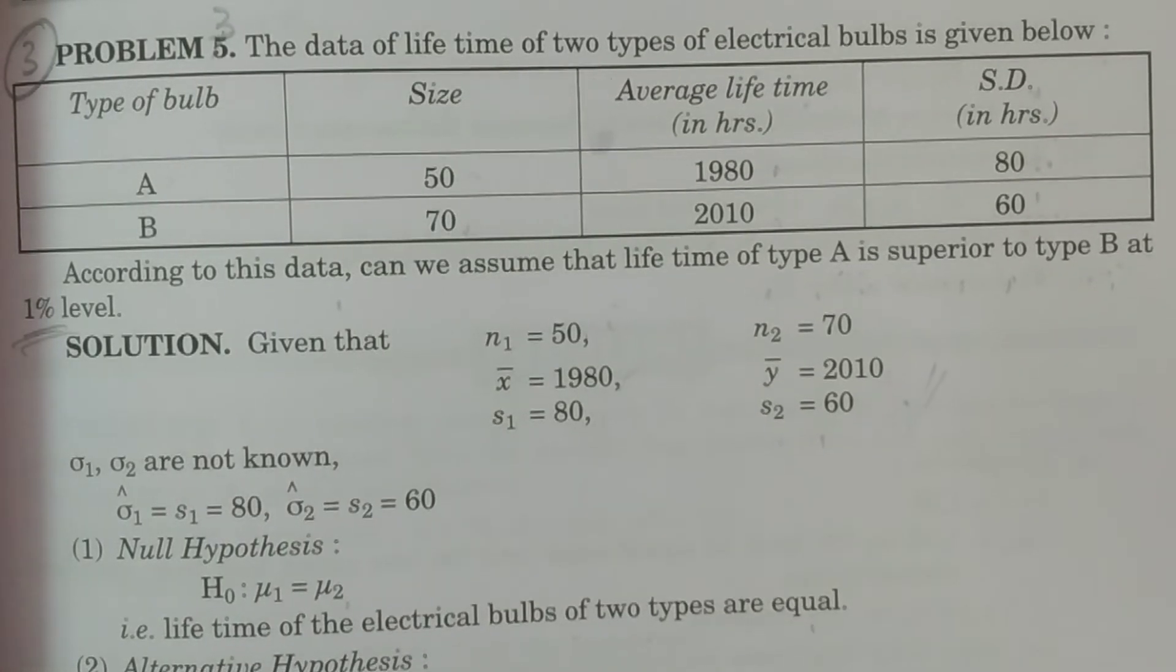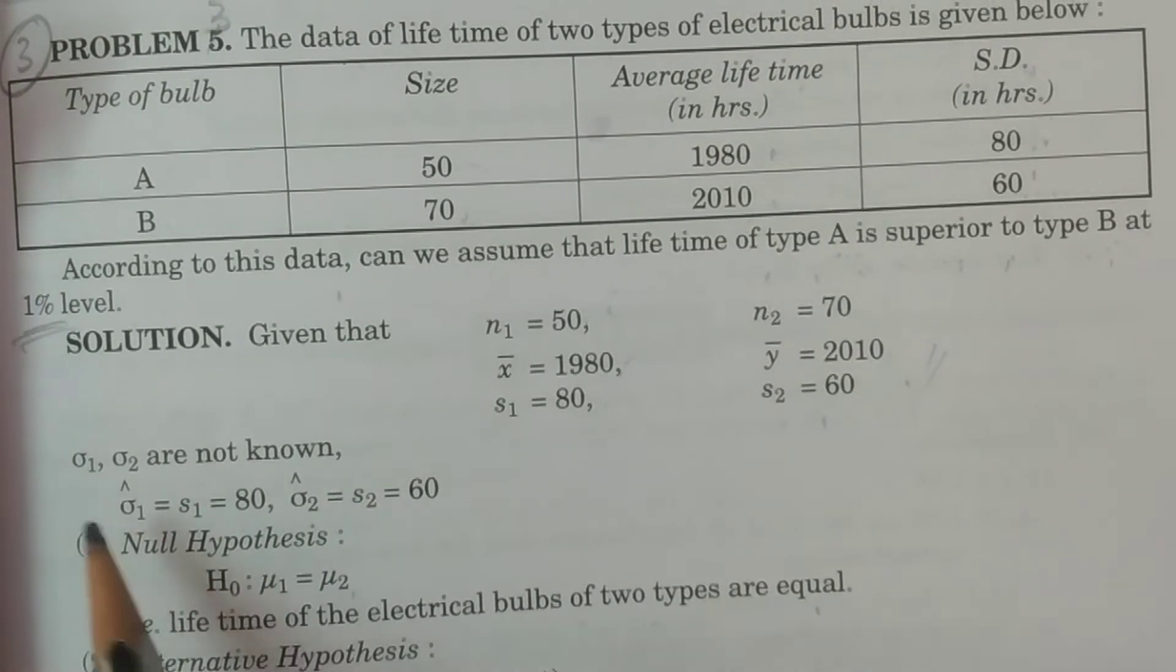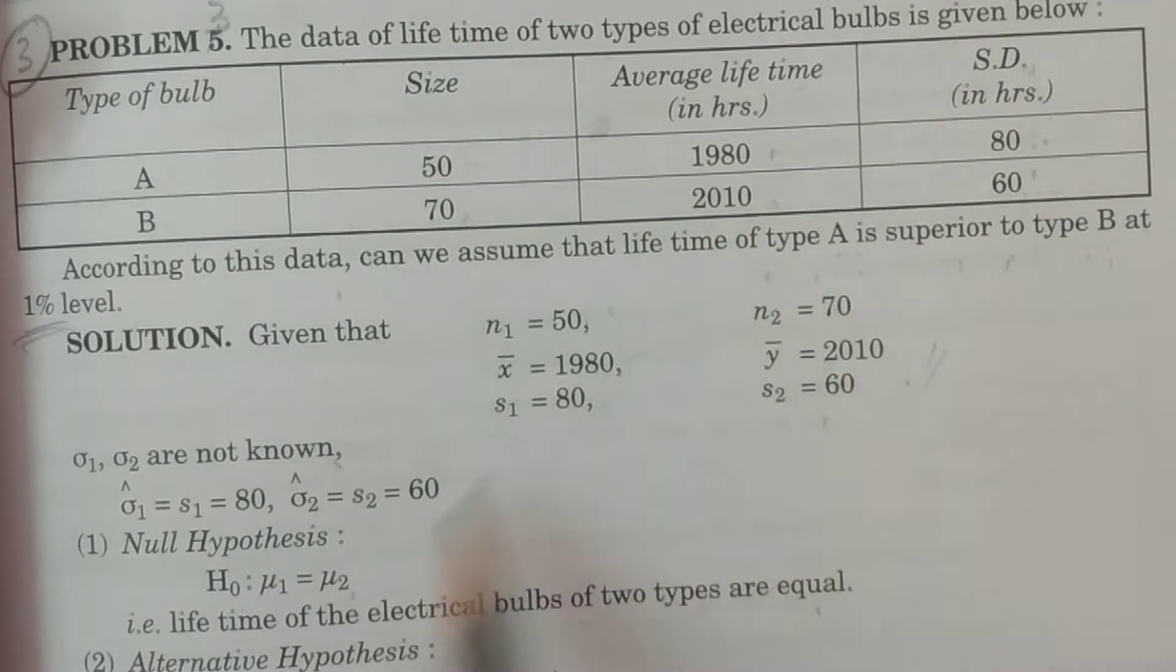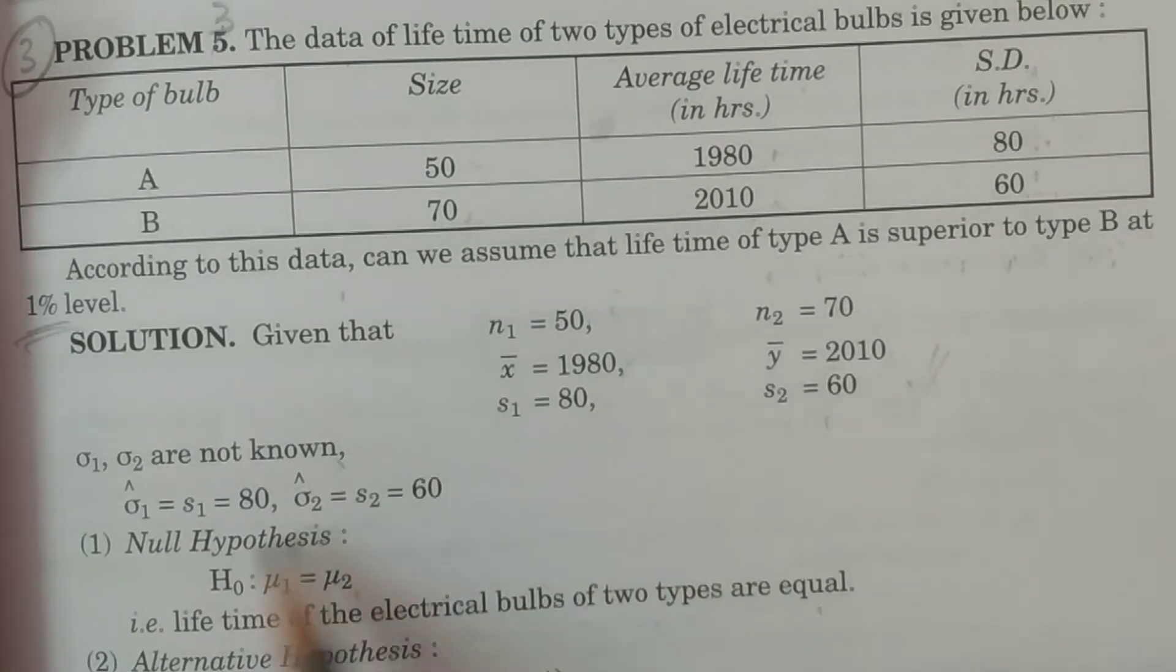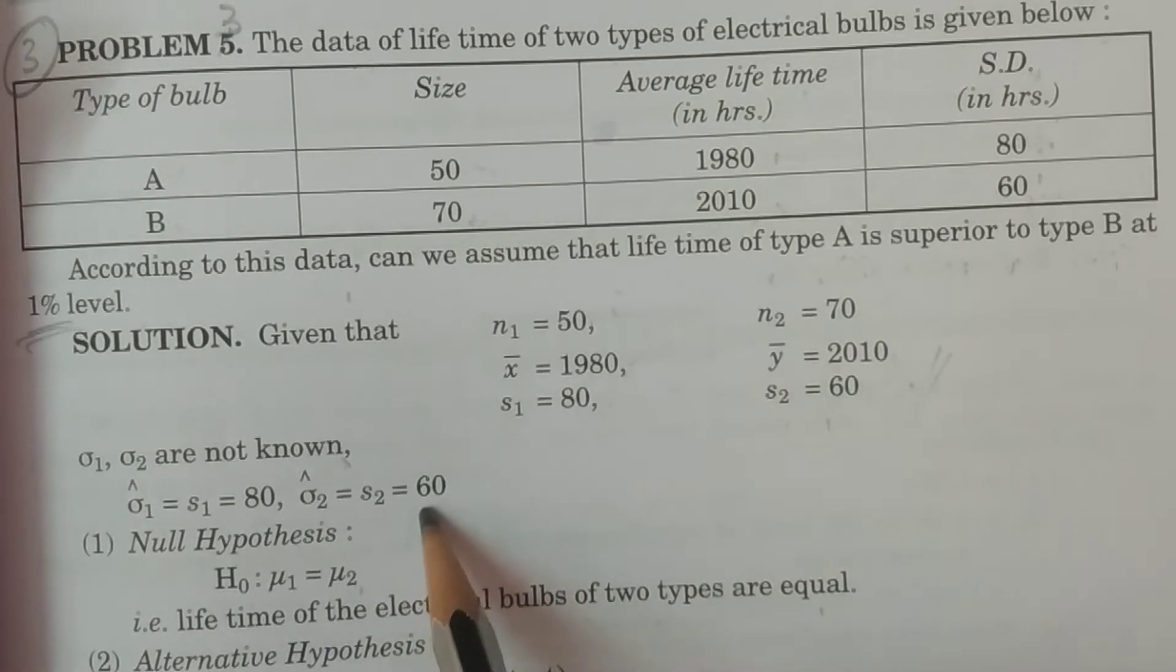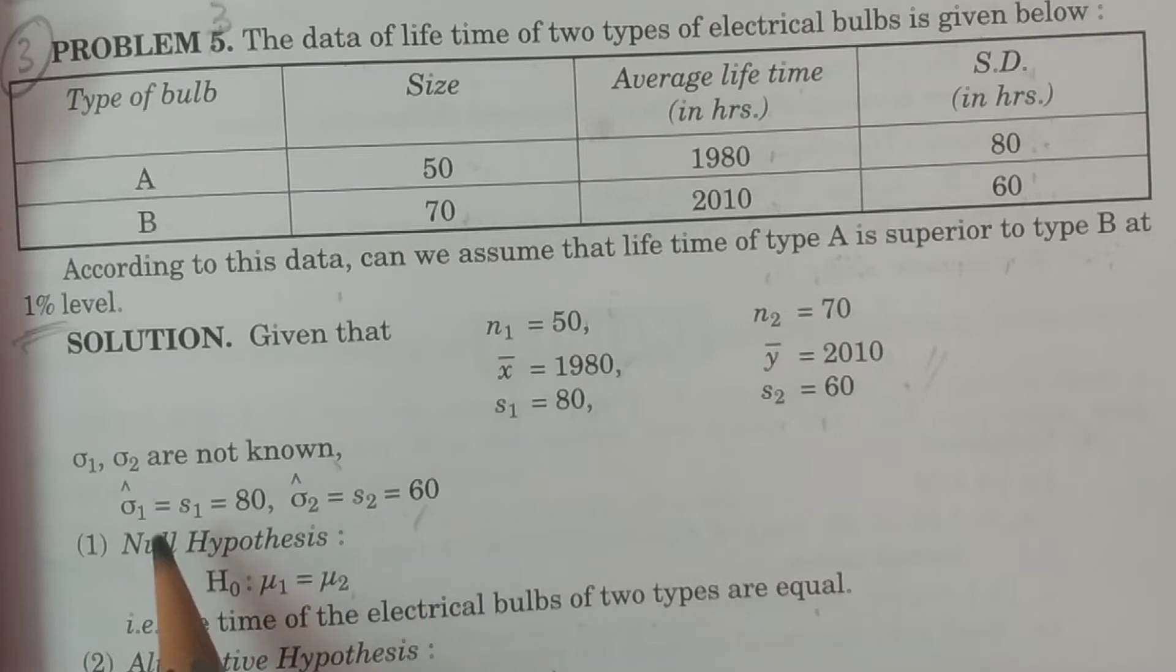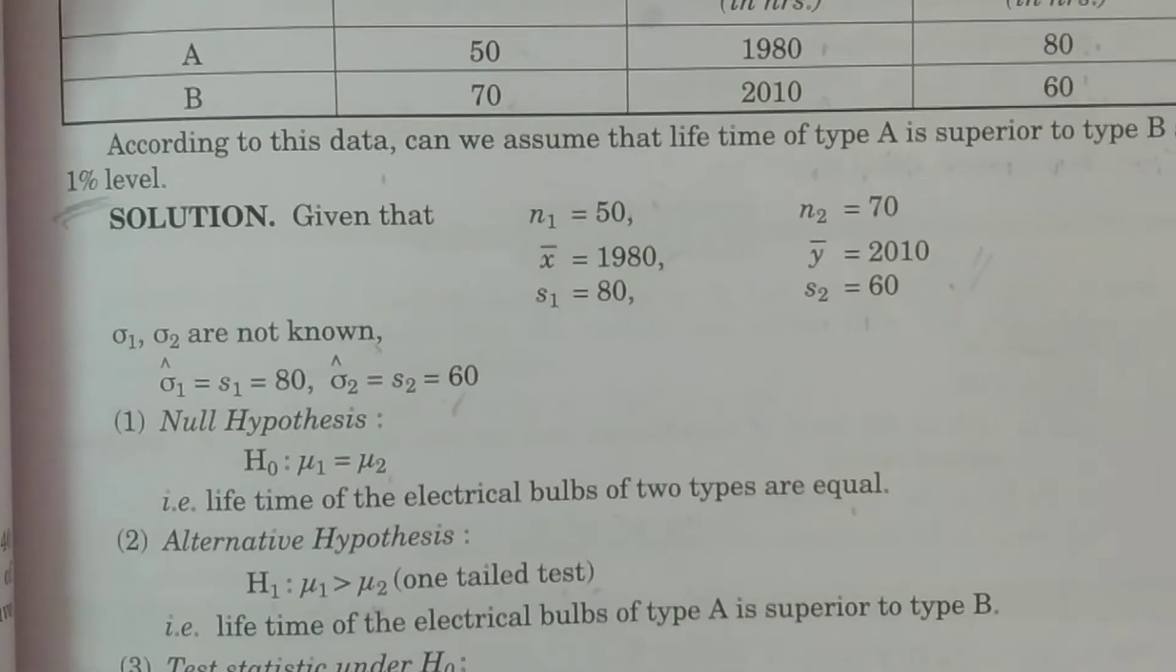In this case, sigma 1 and sigma 2 are not known. That is why sigma 1 crown is equal to s1 is equal to 80. Sigma 2 crown is equal to s2 is equal to 60. Population variances are not known. Testing procedure begins.